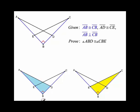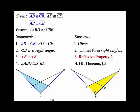The trick is to identify that angle B is in common for both triangles. Since AB is perpendicular to CB, angle B must be a right angle. Looking at the given congruences, AD and CE are the hypotenuses, and AB and CB are the legs.